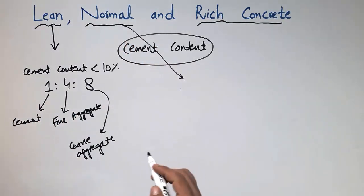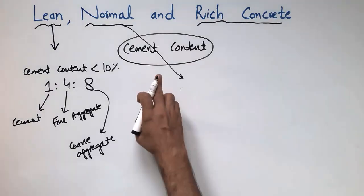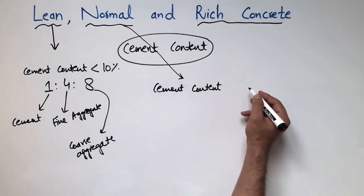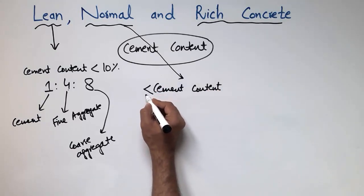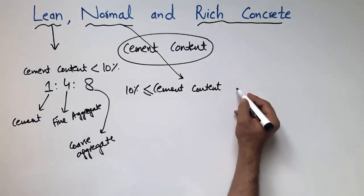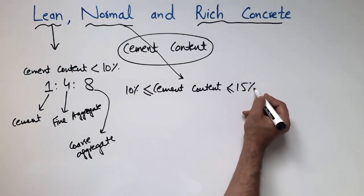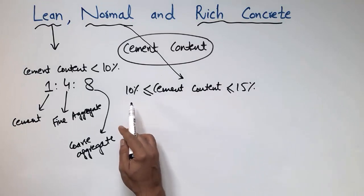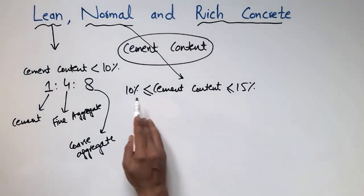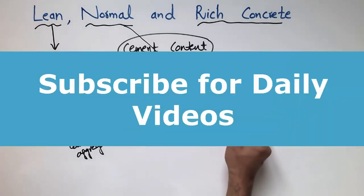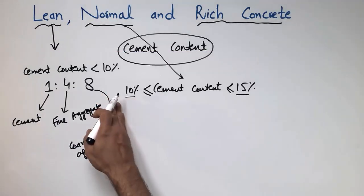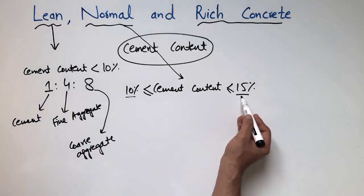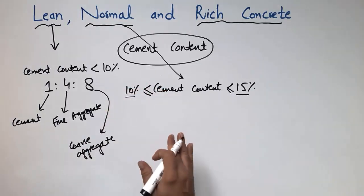Now, what is normal concrete? Normal concrete is the type in which the cement content is in the range of 10% to 15% — that is, greater than 10% but less than or equal to 15%. So the cement content must lie between these two values. If cement content is less than 10%, it's lean concrete, but if it's greater than 10% and less than 15%, it is called normal concrete.